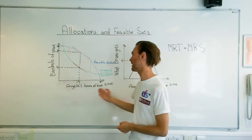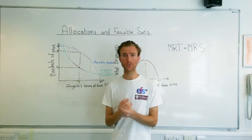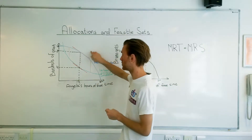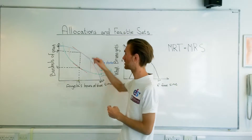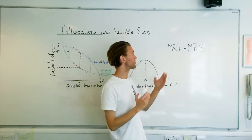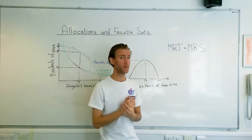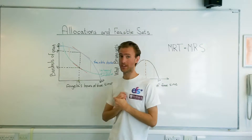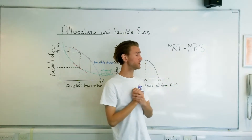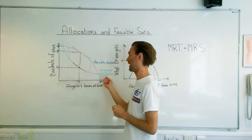Over here is the bushels of grain, and on the x-axis is Angela's hours of free time. To find the optimal point for Bruno, you need to look at the slope of the tangents to the two curves. You need to find the point for which the slope of the tangents are equal — basically, when the marginal rate of transformation equals the marginal rate of substitution. The marginal rate of transformation is the slope of the feasible frontier; it's the transformation of grain into free time. The marginal rate of substitution is how Angela or Bruno can substitute grain and free time.